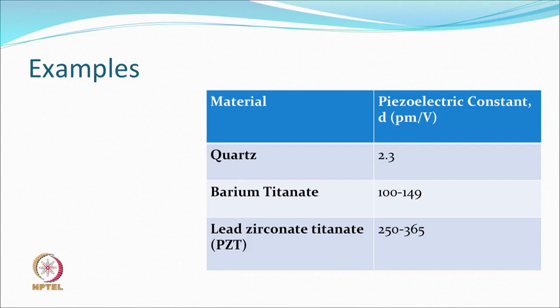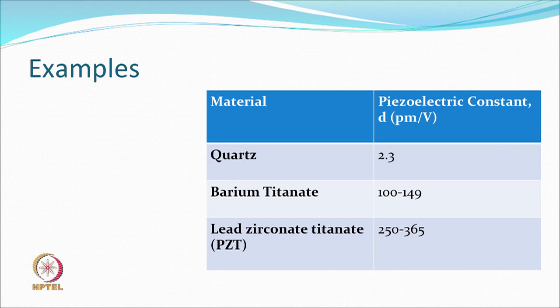Some examples of piezoelectric materials are quartz, barium titanate, and lead zirconate titanate, also known as PZT. The key property is how much dimensional change you get per volt applied. In quartz, the change per volt is in the picometer range — very small. In PZT, the change is more than in quartz. Different materials therefore have different piezoelectric constants, designated as D, and you select them according to your requirements. Most engineering applications use PZT-based sensors.